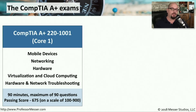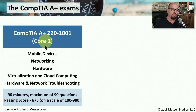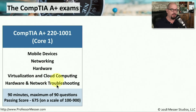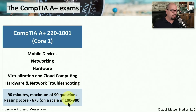To earn your A+ certification, you'll need to pass two separate exams. The first is the CompTIA A+ 220-1001, also called the Core 1 exam. It covers mobile devices, networking, hardware, virtualization and cloud computing, and hardware and network troubleshooting. This exam is 90 minutes long with a maximum of 90 questions, graded on a scale of 100 to 900, and you'll need a score of 675 to pass.